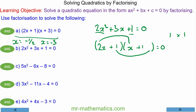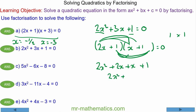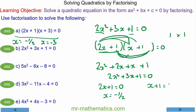We can check this works: expanding gives 2x squared plus 3x plus 1, which equals 0. So the solutions are when each bracket equals 0. When 2x plus 1 equals 0, x equals negative one half. And when x plus 1 equals 0, x equals negative 1.